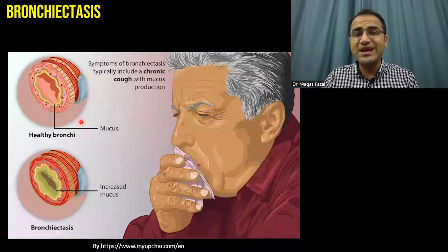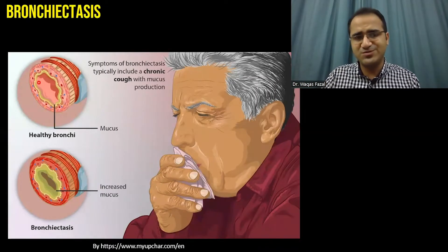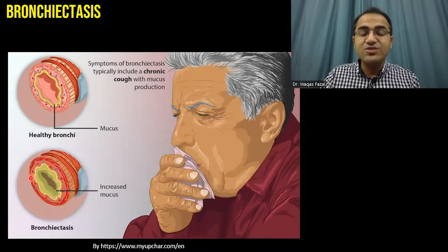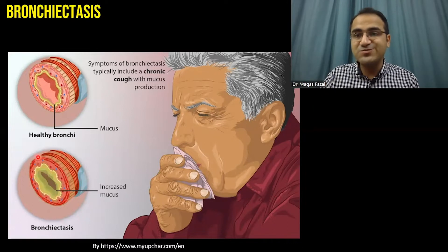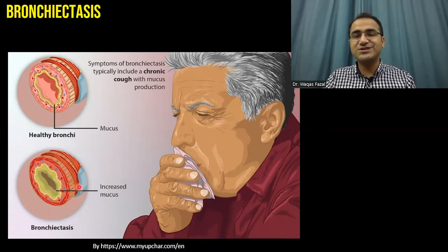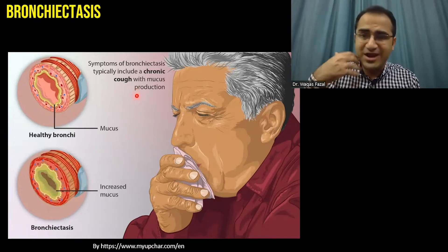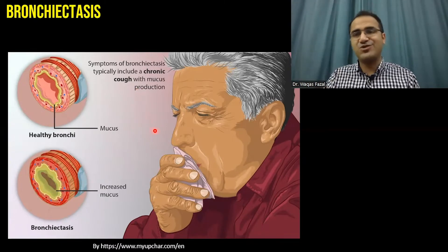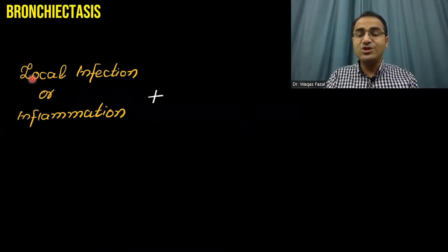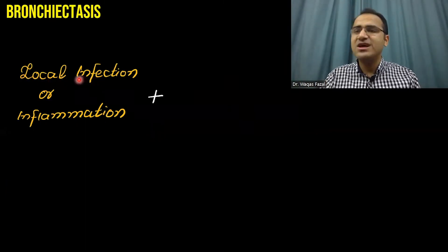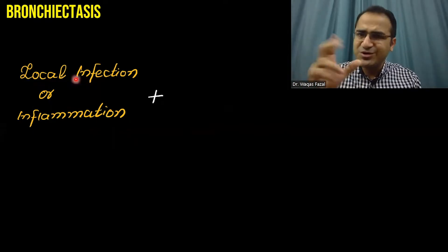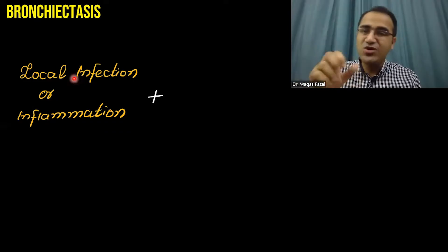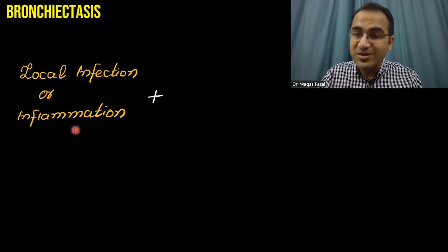This picture shows healthy bronchi with normal mucus production. In contrast, this picture shows excessive mucus production. Therefore, the patient will have chronic cough and excessive mucus production in bronchiectasis. Usually, there is a local host infection like tuberculosis or aspergillosis, and that infection destroys the lungs.